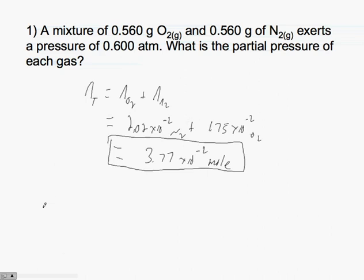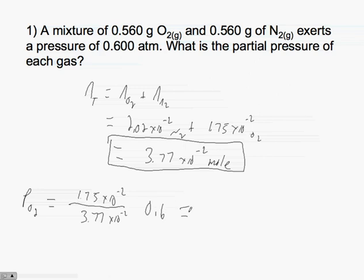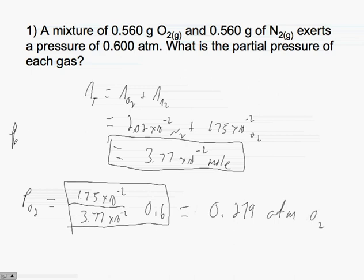The partial pressure of oxygen equals the mole fraction of oxygen times the total pressure: 1.75 times 10 to the minus 2 divided by 3.77 times 10 to the minus 2, times 0.600 atm, which is equal to 0.279 atm. So the partial pressure for oxygen is 0.279 atm.